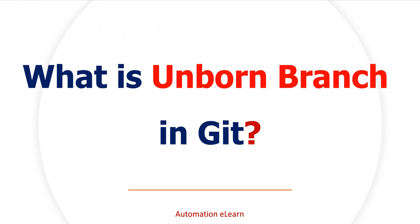Welcome back to Automation Elon. In this video I am going to explain what is an unborn branch in Git and what is the risk associated with an unborn branch. In Git there are two types of branches: born branch and unborn branch. Born branch is the branch where we normally work and perform commits. Unborn branch is the branch which does not yet exist, meaning it doesn't have any commit.